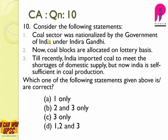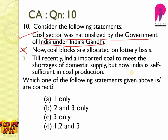Question number 10 is regarding the coal sector. The coal sector was nationalized by the Government of India under Indira Gandhi — yes, absolutely correct. Coal blocks are allocated on a lottery basis — no, this is wrong because coal blocks are allocated on the basis of auction. India imported coal to meet shortages of domestic supply but is now self-sufficient in coal production — no, this is also not true because India is still dependent on imports for coal. So the answer is A, statement 1 only.